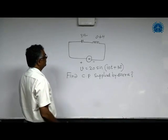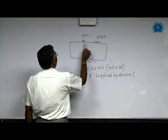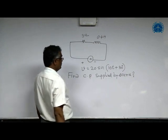In this problem, an AC voltage source is applied to an RL series circuit. Find the complex power supplied by the source.